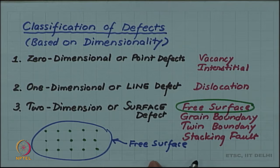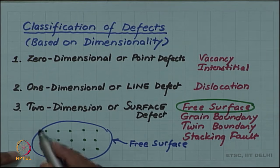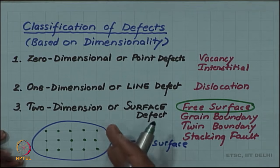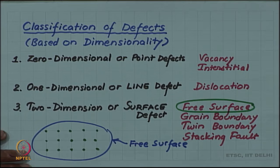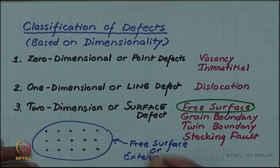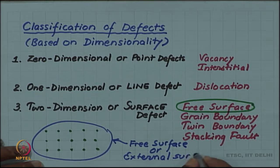Only an infinite lattice can be an ideal lattice. Any boundary will break the periodicity and free surface breaks this periodicity. The free surface or sometimes called external surface will always be present in any crystal. However perfect it is internally, this external surface will always be present in a real crystal.